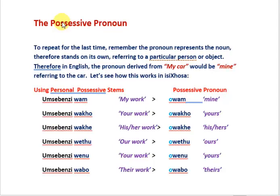The last pronoun — the possessive pronoun — to repeat for the last time: we remember that the pronoun represents the noun standing on its own and referring to a particular person or object. So in English, the pronoun derived from 'my car' would be 'mine', referring of course to the car.